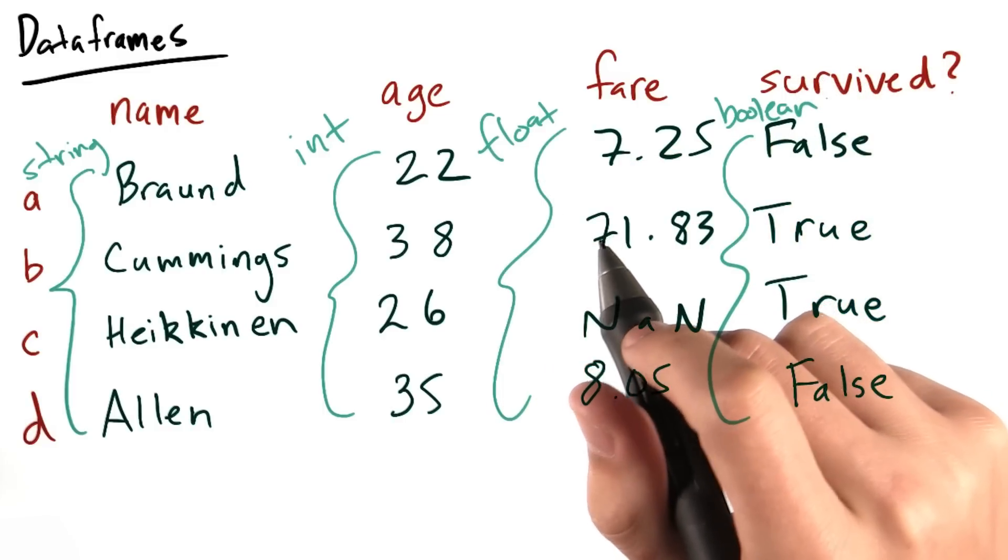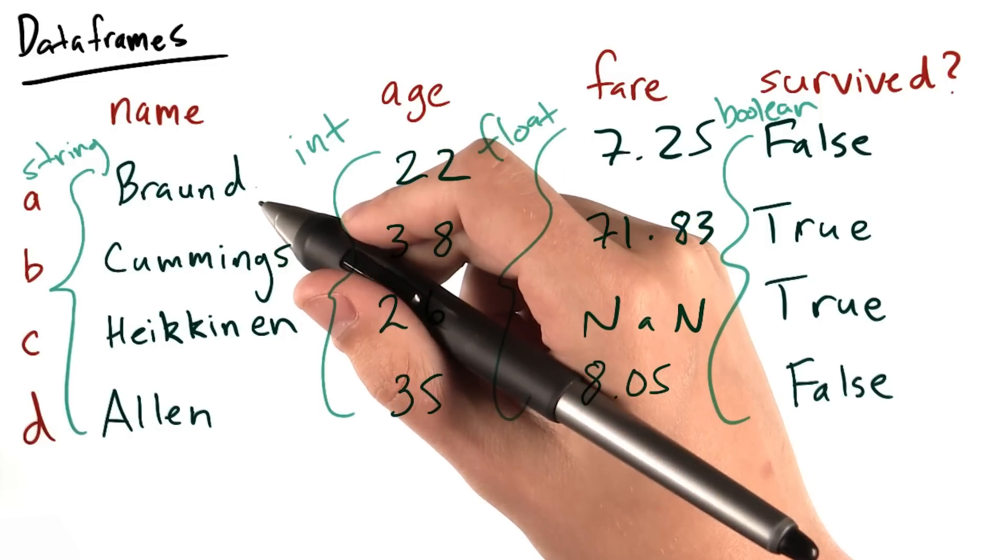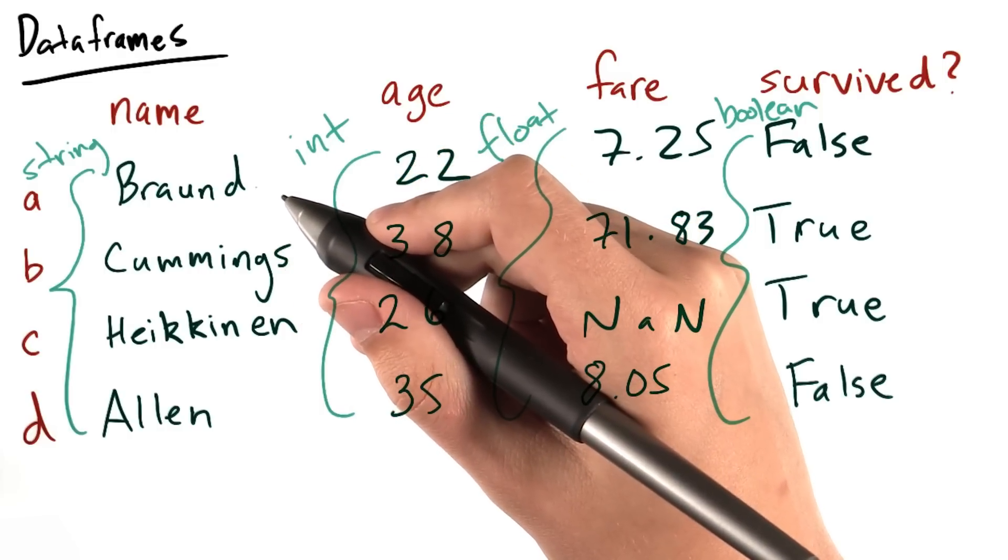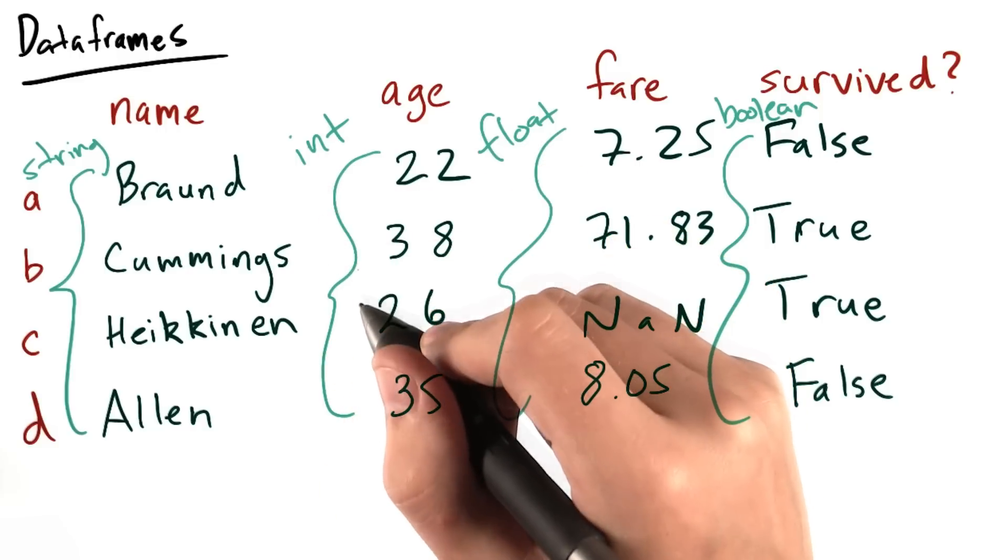For now, here's what an example data frame might look like, using data describing passengers on the Titanic and whether or not they survived the Titanic's tragic collision with an iceberg. You'll be using this very data set for project number one.